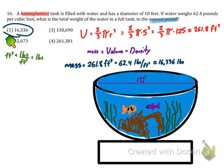So if I multiply these two things, 62.4 pounds per cubic foot, that's my density value, and 261.8 cubic feet, that gives me 16,336 pounds approximately. So there you have your answer.